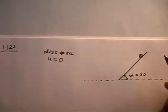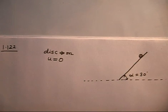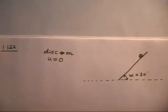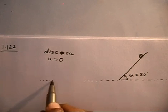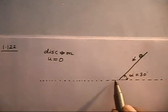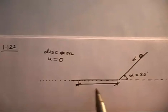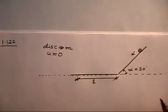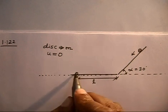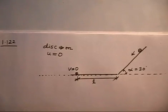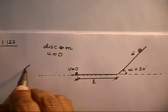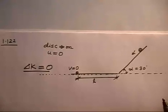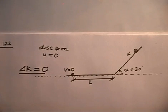The disk slides down the incline and then traverses a distance L along the horizontal plane before stopping. So the initial velocity is zero and the final velocity is also zero, meaning the change in kinetic energy ΔK is zero. We need to find the work performed by the friction forces over the whole distance.